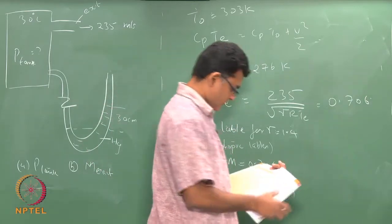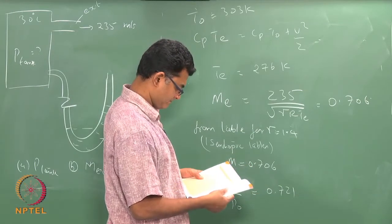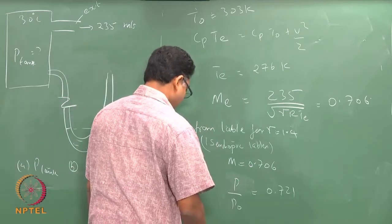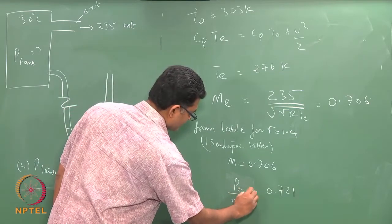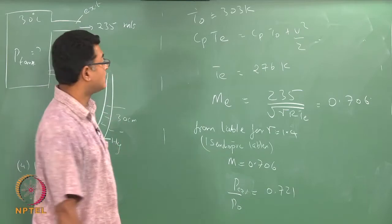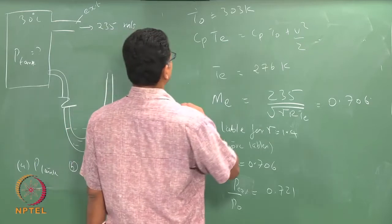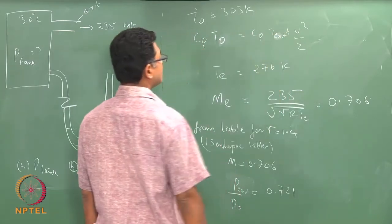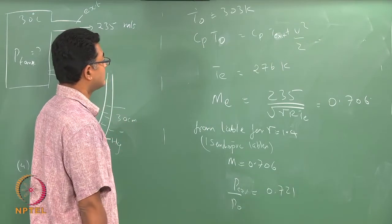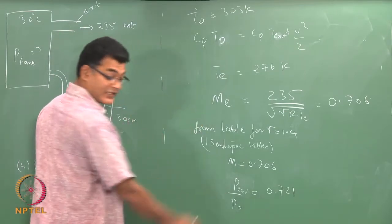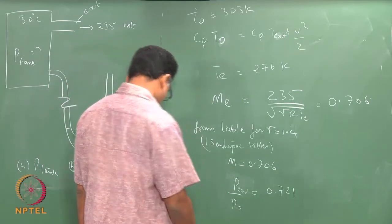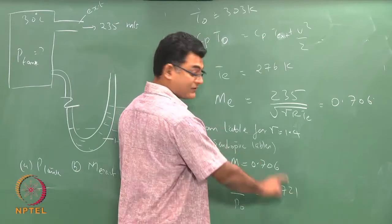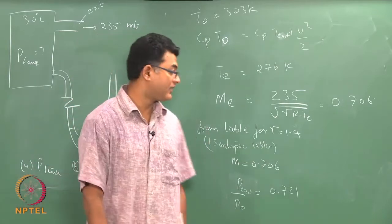Now, the moment you get the Mach number at the exit, you look at the isentropic tables for gamma equals 1.4. For M equals 0.706 — approximately 0.7 — P/P0 from the tables is equal to 0.721. From this, as we have done before, you can find your P_exit. So this is Cp*T0 equals Cp*T_exit plus the kinetic term. The moment you get the Mach number you get this ratio, and once you get this ratio you can find all the quantities we were discussing. Instead of using the formula directly, we have just used the tables — that is the only difference.